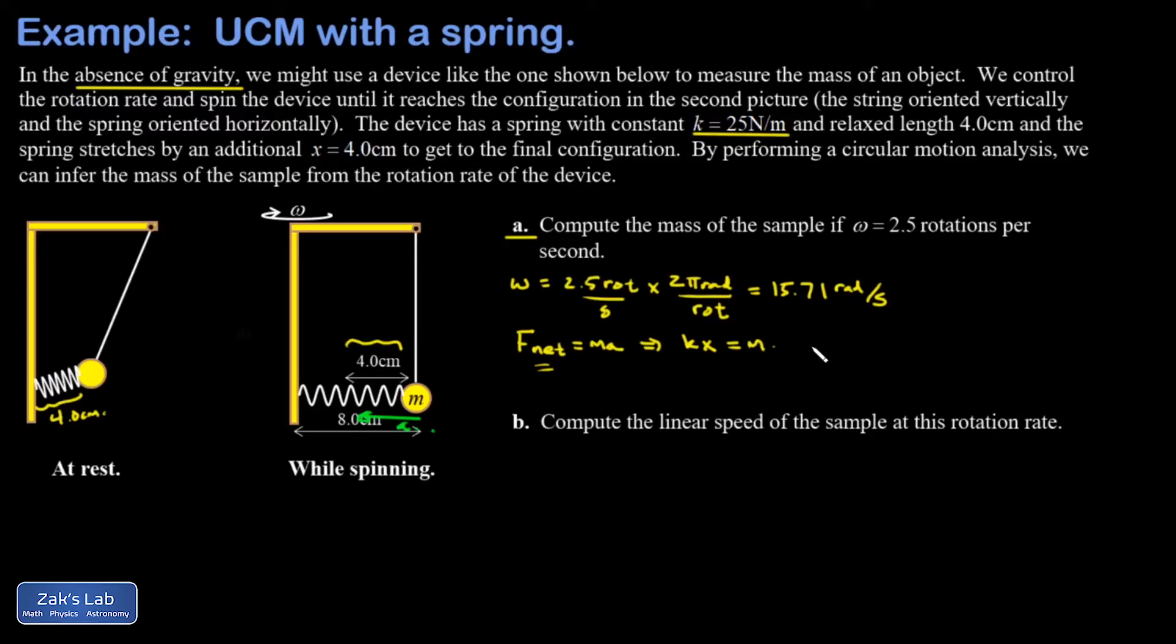In our acceleration we can write as v² over r for the centripetal acceleration, but it's more appropriate here to use the formula in terms of the angular velocity. The centripetal acceleration is r omega squared. This means we can solve for our little mass.